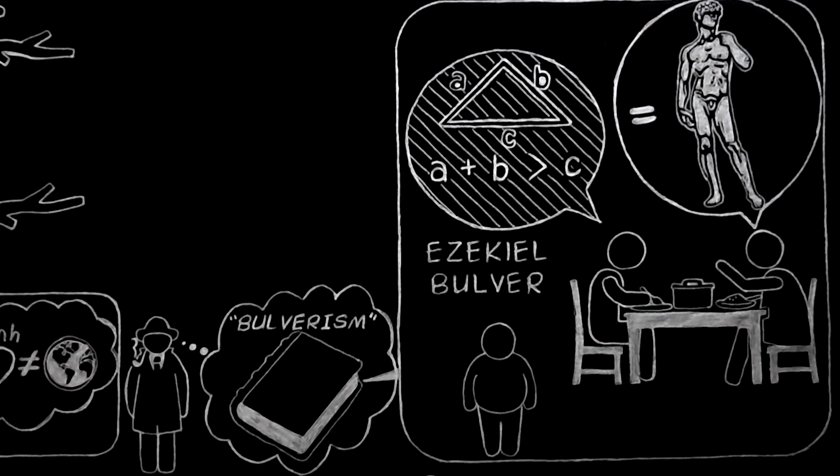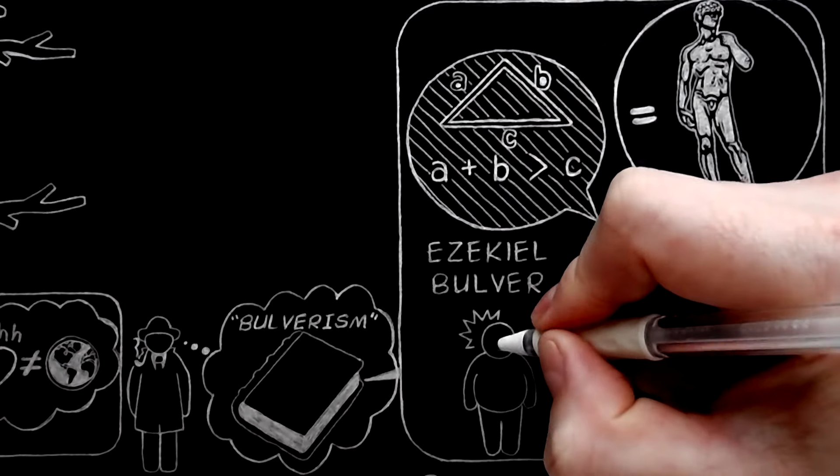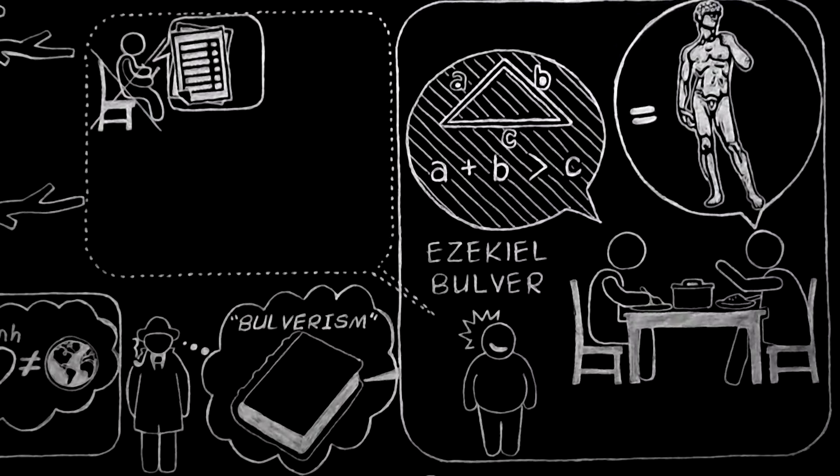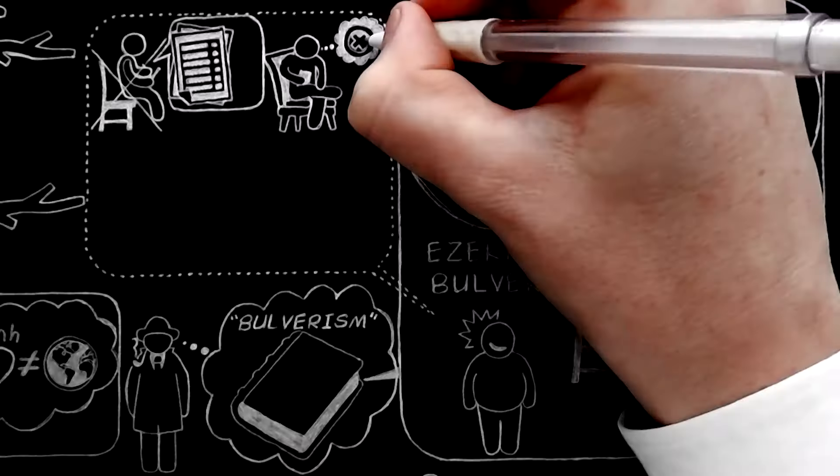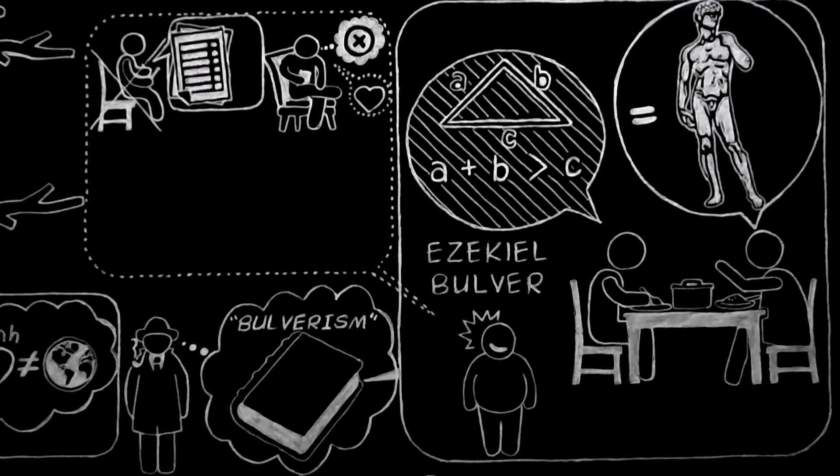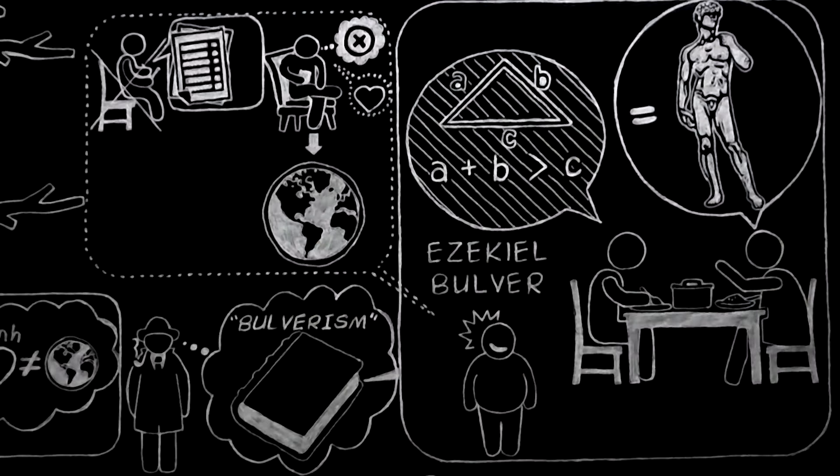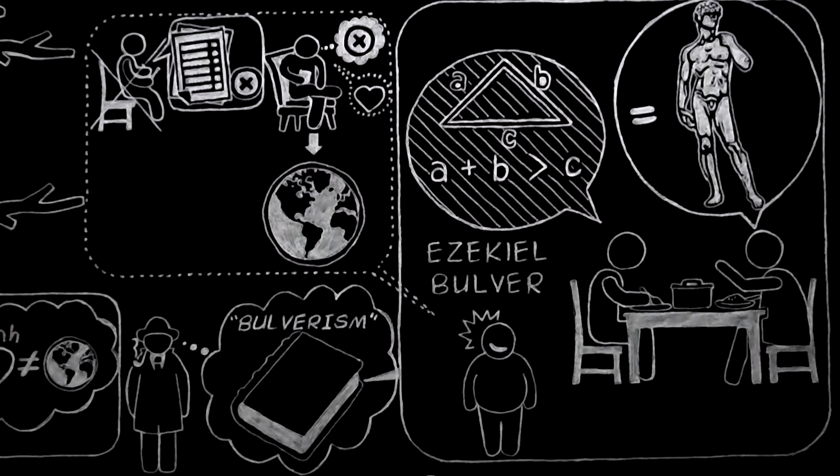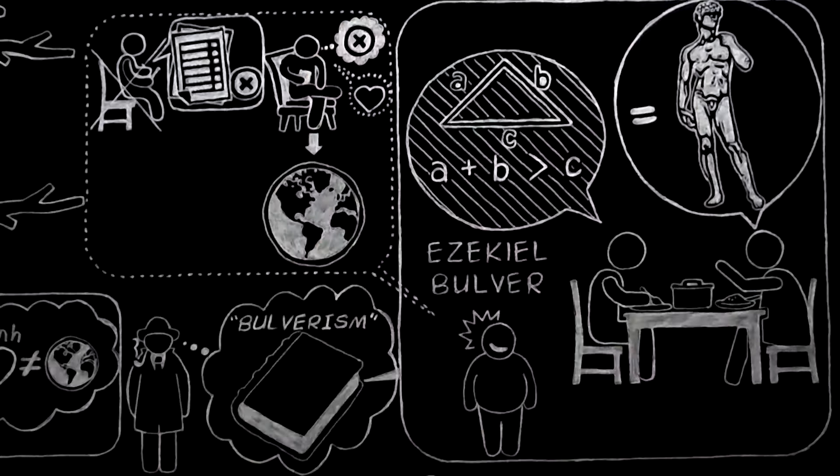At that moment, E. Bulver assures us, there flashed across my opening mind the great truth that refutation is no necessary part of argument. Assume that your opponent is wrong and then explain his error, and the world will be at your feet. Attempt to prove that he is wrong, or worse still, try to find out whether he is wrong or right, and the national dynamism of our age will thrust you to the wall.